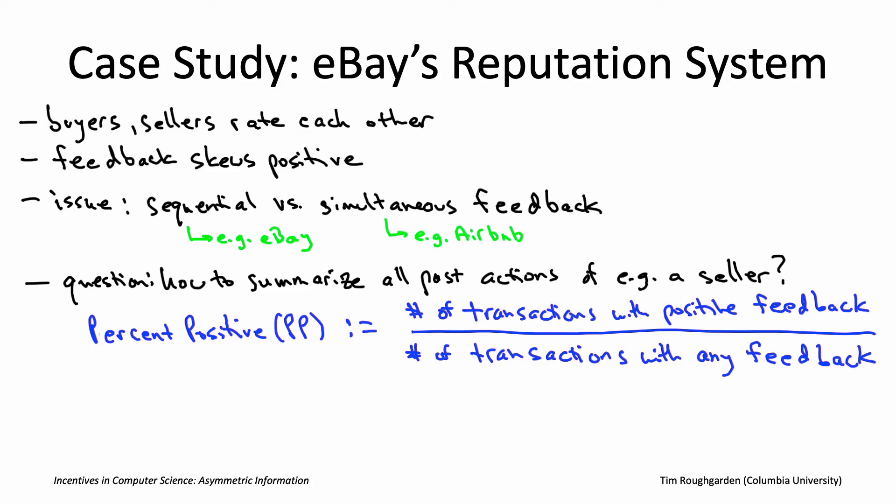But actually, if you see a seller on eBay with a PP score of 98%, you should run the other way — they would be in the 10th percentile. Only the worst 10% of sellers have a PP score of 98% or less. This gives you a sense of just how heavily positive the feedback skews.